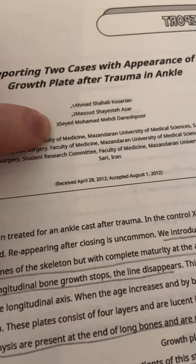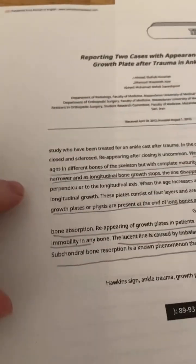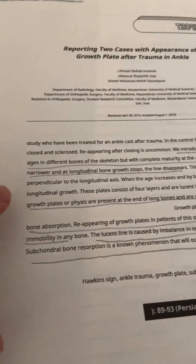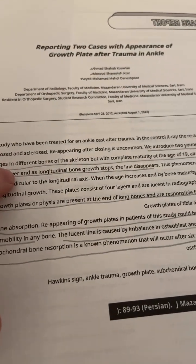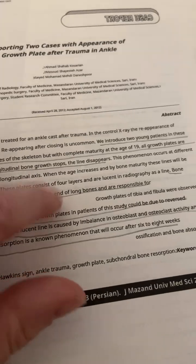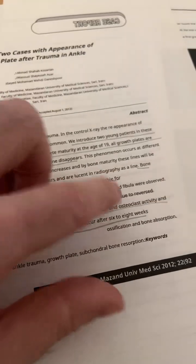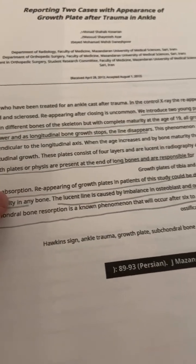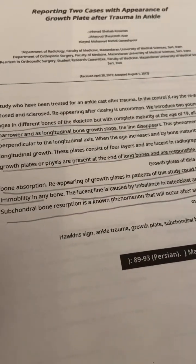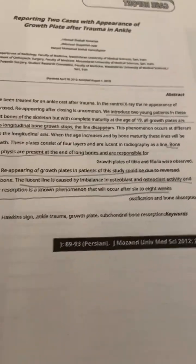If anyone knows these researchers and can contact them, that would be very helpful. Here's the paper. We introduce two young patients with complete skeletal maturity at the age of 19. All growth plates are narrower and as longitudinal bone growth stops, the line disappears. Bone growth plates or physes are present at the ends of long bones and are responsible for bone absorption. Reappearing of growth plates could be due to reversed immobility in any bone. The lucent line is caused by imbalance in osteoblast and osteoclast activity, and subchondral bone resorption is a known phenomenon that will occur after six to eight weeks of immobility.